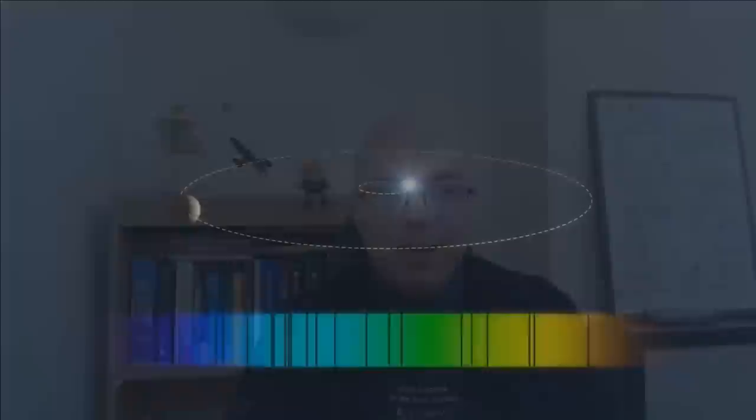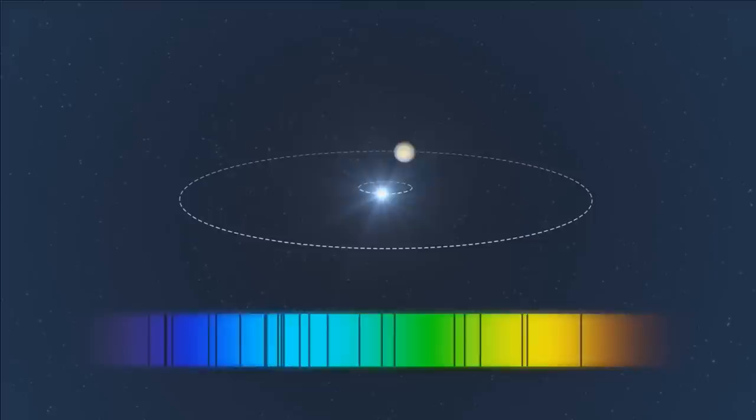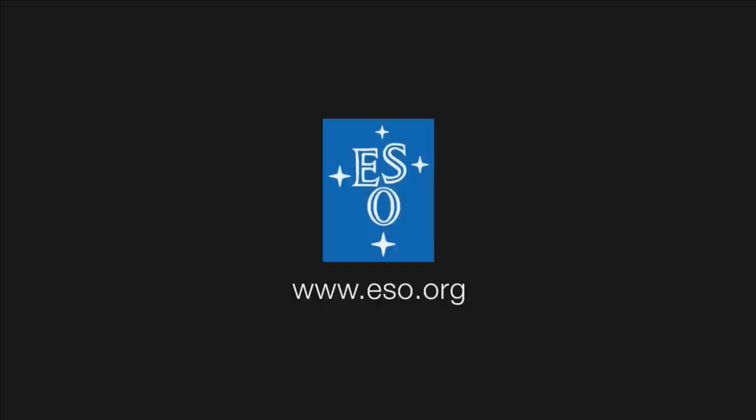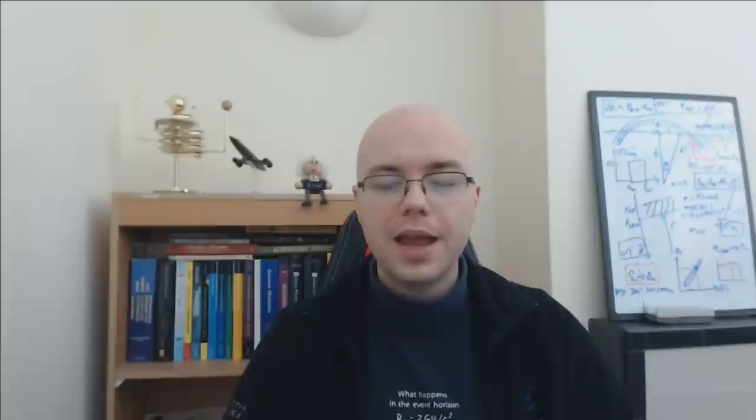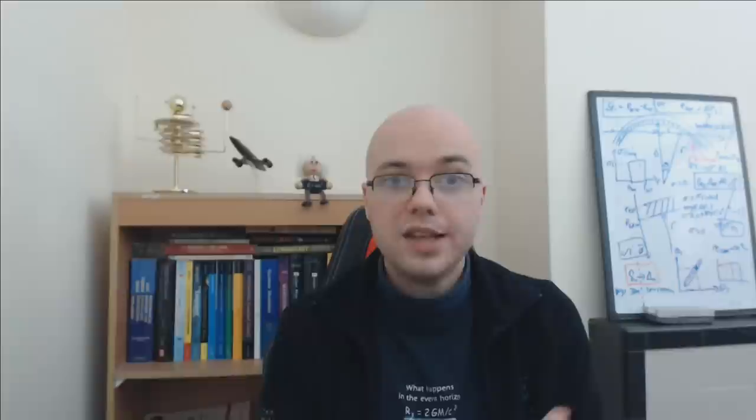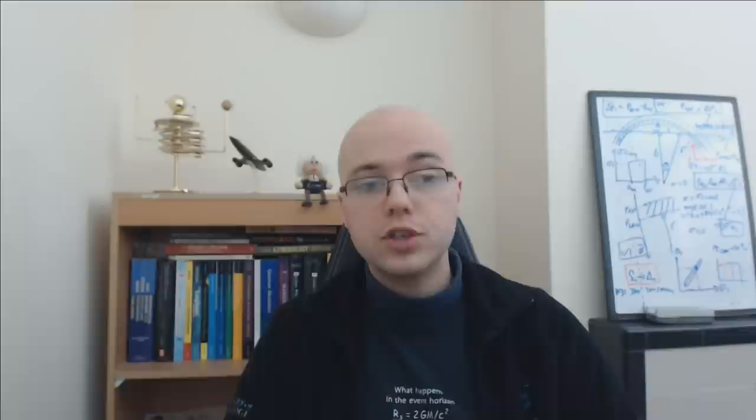In radial velocity measurements, the method doesn't have inherent distance limitations, but you need high signal-to-noise ratios for precise measurements. This effectively means that if you want to look at very low-mass planets, radial velocity only really lets you see out to a couple hundred light years. For more massive planets you can go out to a few thousand light years. And if you want to go to crazily high distances, you can use something like gravitational microlensing — a very good technique if you want to look at planets closer towards the centre of the Milky Way or even in Andromeda.